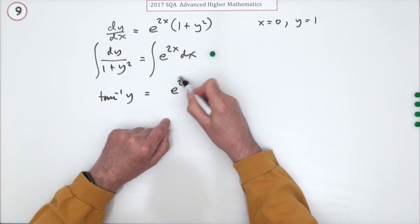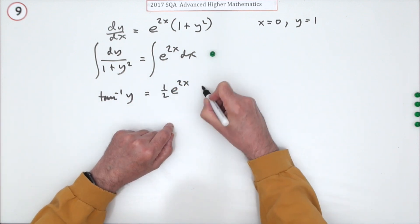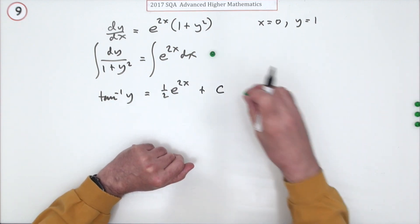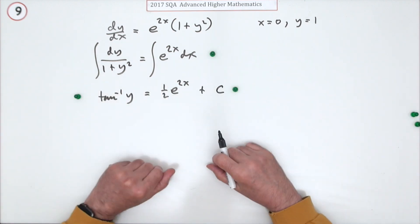And e to the whatever just stays as e to the whatever. But since it's a function of a function, the inner derivative is 2. And if you're integrating, that will be divide by that 2. So that's a half of it. Plus c. Doing that gets two marks because you get one for integrating each side. Three marks so far.